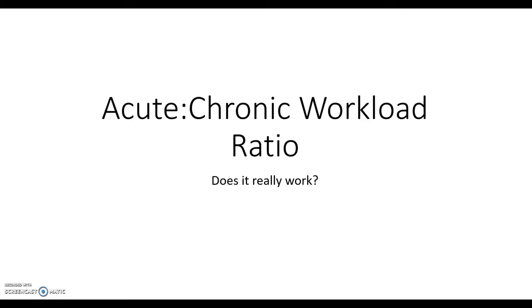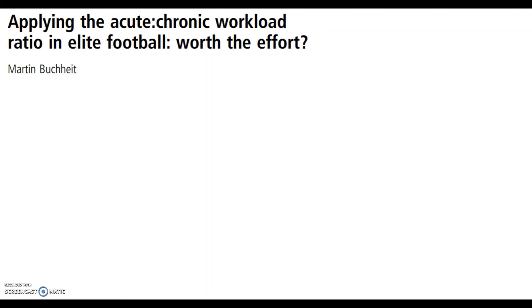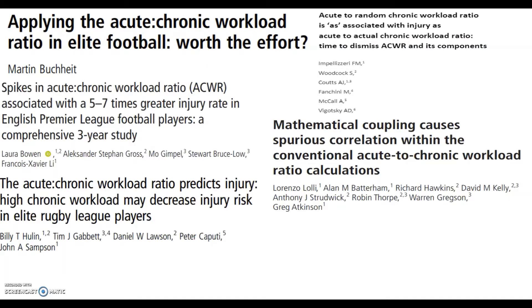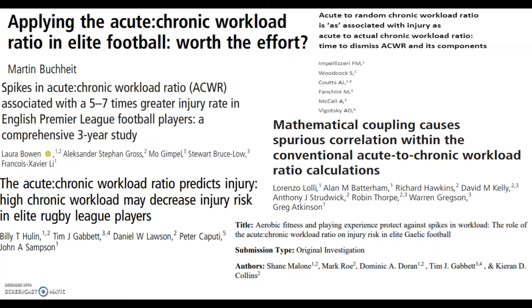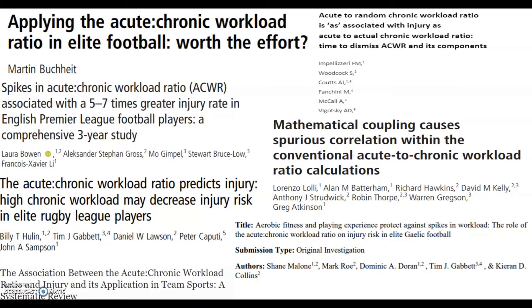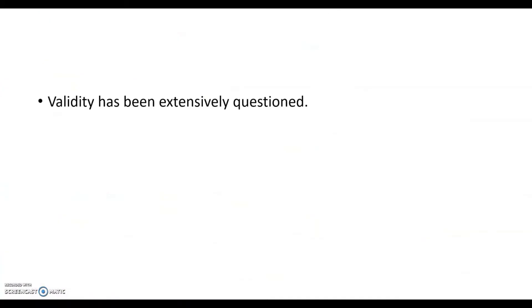Before anything else, I just want to give a couple of quick words on the acute chronic workload ratio — does it really work? Currently there's a lot of research out there that examines the validity and reliability of the acute chronic workload ratio method. Some of these studies support the theory and claim that the acute chronic ratio can be used to predict injury, and the results have found positive correlation with injury risk. However, the other group of research actually questions the validity of this method and has found that there are mathematical problems with the calculation itself, and there are also too many factors in injury risk assessment for this to apply to real life. So the validity of these methods has been extensively questioned, and it's important to keep that in mind.